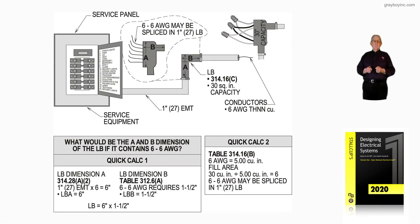Now, this illustration deals with LBs, and notice that in the quick calc, what would be the A and B dimension of an LB if it contains six number six AWG conductors? We can splice in an LB if it's listed to do so. If not, you're not supposed to make any kind of splice in an LB, just pull through it as a junction point.